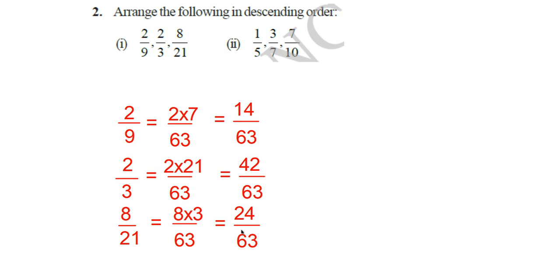Now look at the numerator. Which one is greater? Here, 42 is greater than the others. So biggest number is 42 by 63. So you can write it as 2 by 3, then 24, so 8 by 21, then 14, 2 by 9. So we can arrange it as 2 by 3, 8 by 21, and 2 by 9.